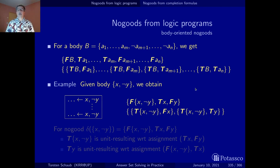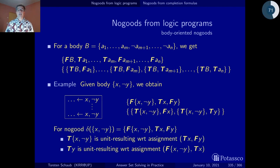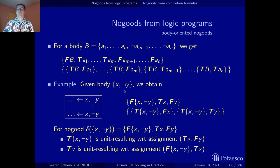I picked the no-good with three literals to illustrate how inferences on the program correspond to unit propagation on no-goods. In the first case, our assignment says x is true and y is false, meaning both constituent literals in the body have been found to be true. Hence by unit propagation, we can deduce that the body is true.